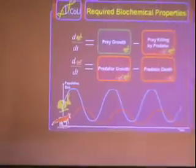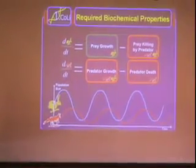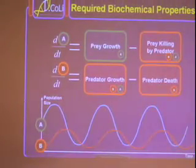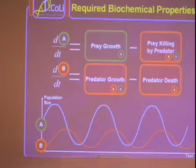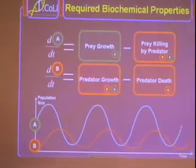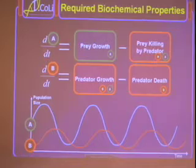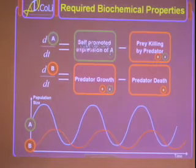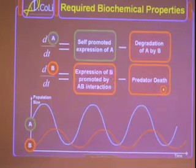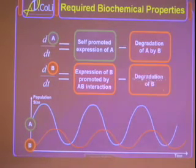Now we want a molecular system. So we're going to replace the rabbit with molecule A and the fox with molecule B. So now we've got these populations of molecules which will oscillate in our system. And then we have to turn these ecological principles into biochemical principles. So prey growth becomes self-promoted expression of A. Prey killing by predator is now degradation of A by B. Predator growth is now expression of B by the A-B interaction. And predator death is degradation of B.